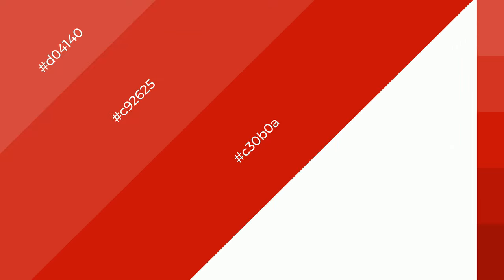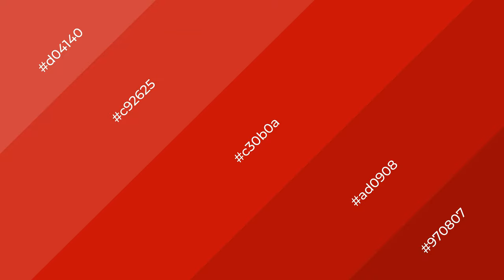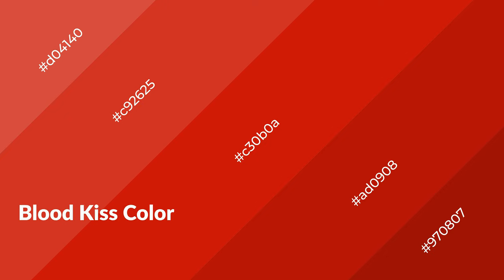3D effects, layers and shades create depth and drama. Blood Kiss is a warm color, and it emits cozier and active emotion.